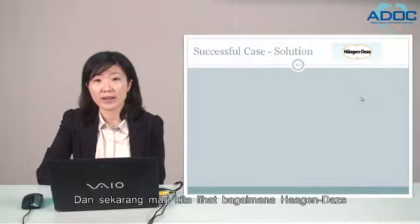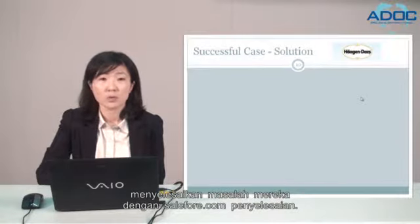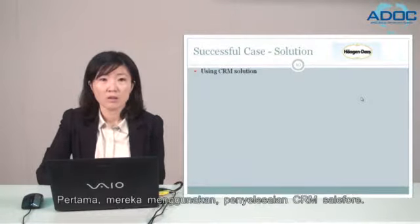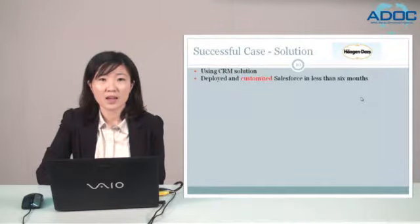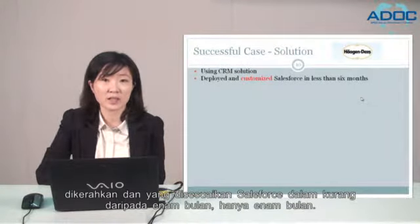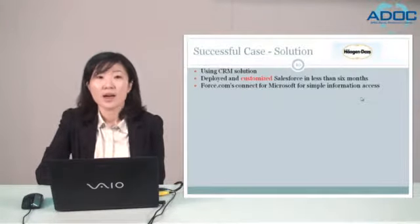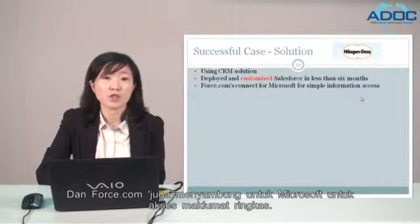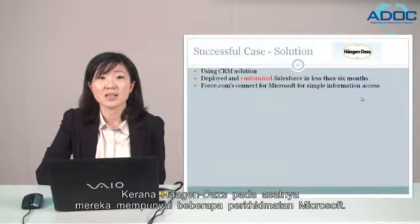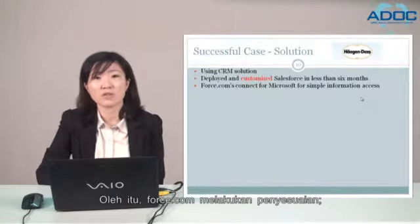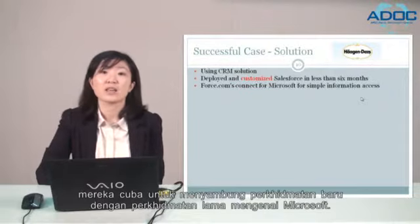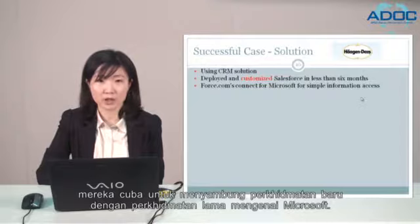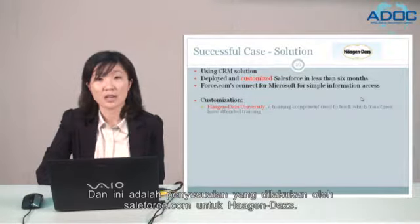Now let's see how Häagen-Dazs resolved their problems with Salesforce.com. First, they used Salesforce CRM and deployed and customized Salesforce in less than six months. Force.com also connected with Microsoft services for simple information access, because Häagen-Dazs originally had some Microsoft services they wanted to keep. Force.com did customization to connect new services with the old Microsoft services.